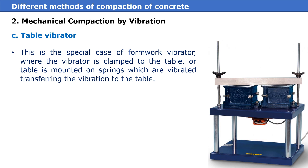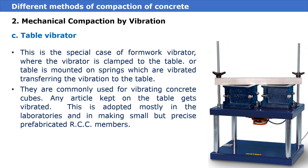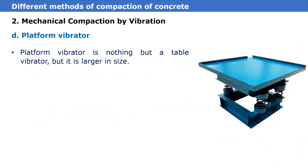Third is the table vibrator. This is a special case of formwork vibrator where the vibrator is clamped to the table, or the table is mounted on springs which are vibrated, transferring the vibration to the table. They are commonly used for vibrating concrete cubes — any article kept on the table gets vibrated. This is adopted mostly in laboratories and in making small but precise prefabricated RCC members.